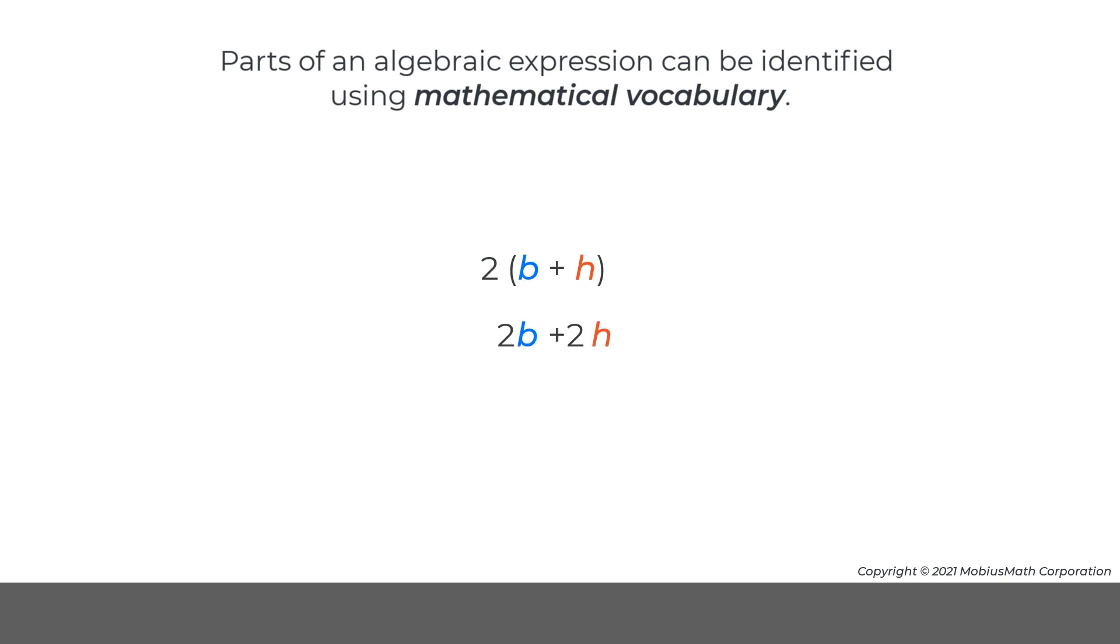If the distributive property is applied to this expression, the equivalent expression is the sum of two terms, 2b and 2h. A sum is the result of adding two or more terms. Terms are the parts of an expression that are added or subtracted.